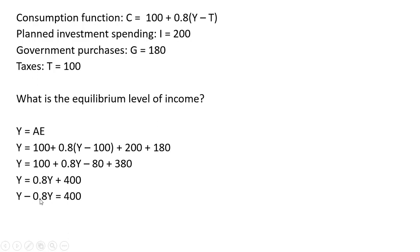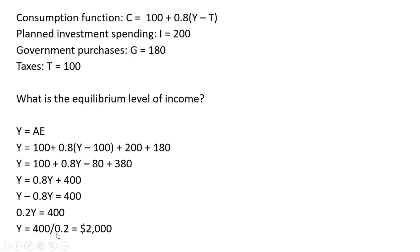I'm going to subtract 0.8Y from both sides. On the left-hand side, we get 1Y minus 0.8Y, which leaves us with 0.2Y. Now divide everything through by 0.2. So 400 divided by 0.2 equals 2,000. That is our equilibrium level of income.